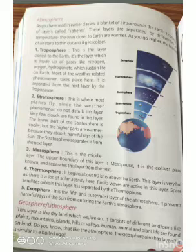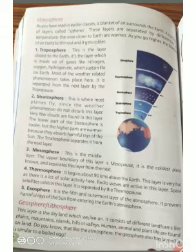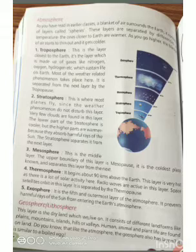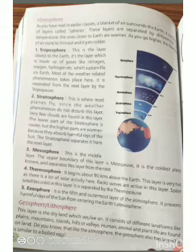As you have read in earlier classes, a blanket of air surrounds the Earth. It consists of layers called spheres. These layers are separated by differences in temperature. The layers closer to Earth are warm; as you go higher, the blanket of air starts to thin out and it gets colder.